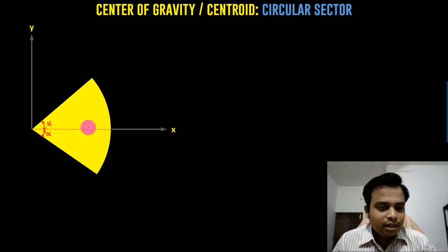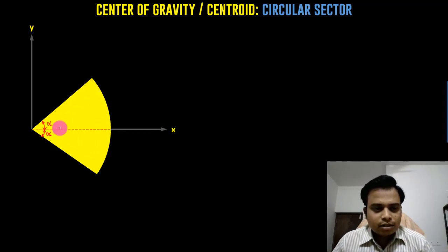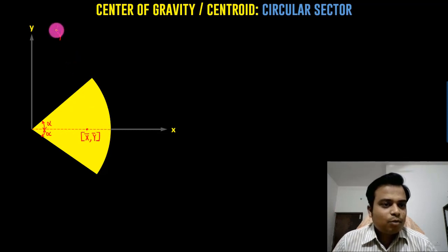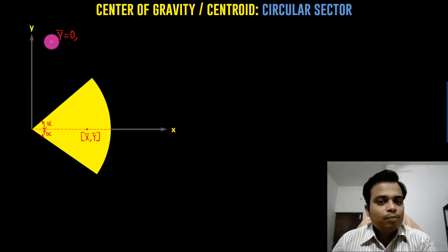One thing is for sure, the centroid of this circular sector is going to lie somewhere here. Let's say that its centroid is represented by x bar, y bar, and this is something that we need to work on. Since y bar is along this x axis, that means y bar from observation can be written as zero. So the one thing that we need to work on is the value of x bar. How can that be achieved?